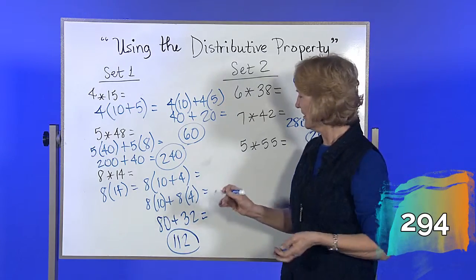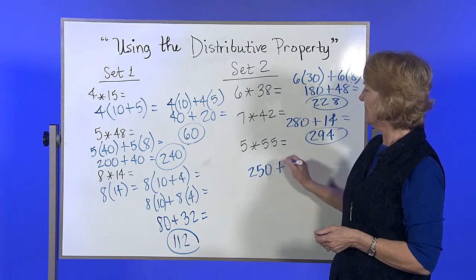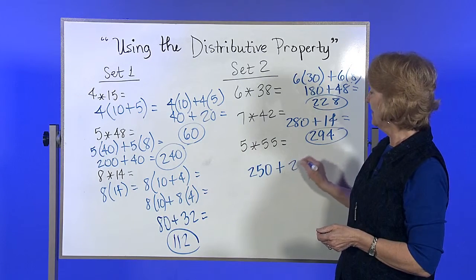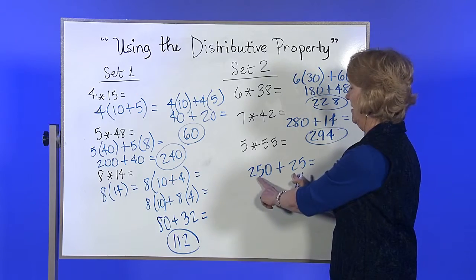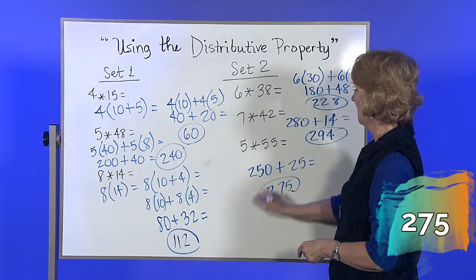You don't have to punch a calculator. 5 times 55 - 5 times 50 would be 250. 5 times the 5 is 25. 50 and 20 become 70, so 275.